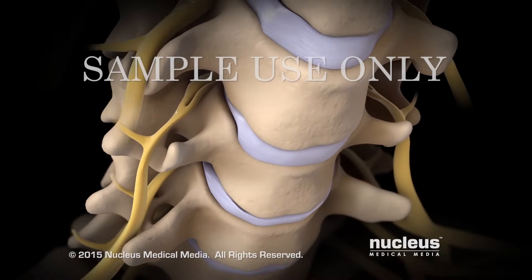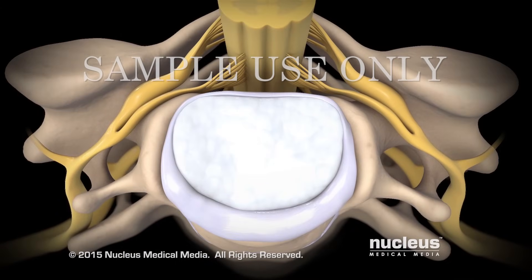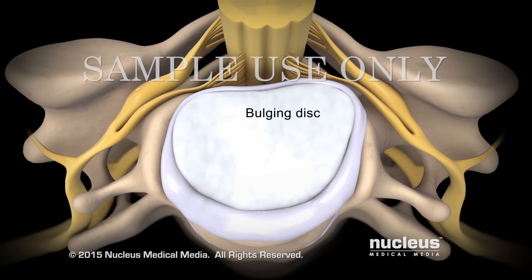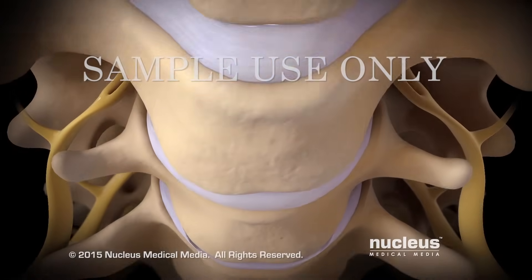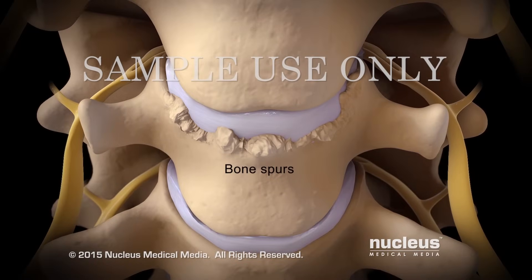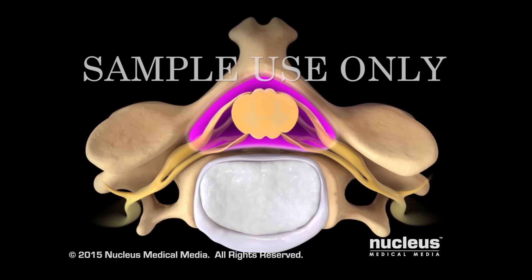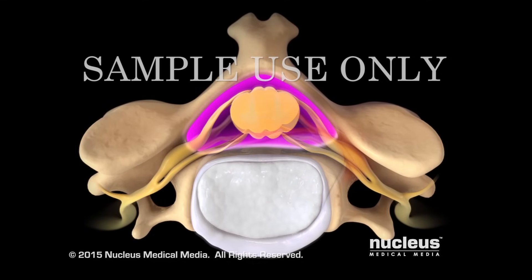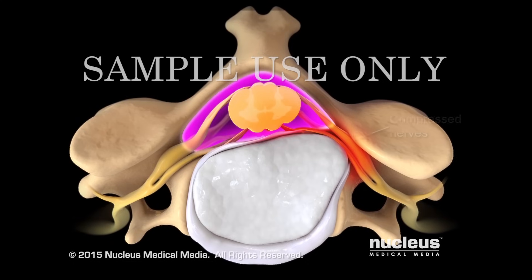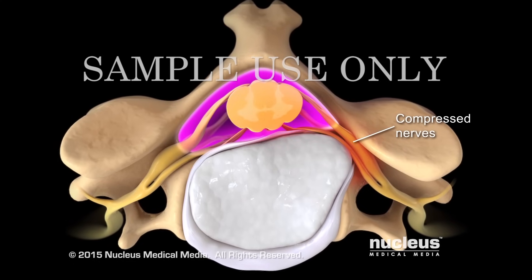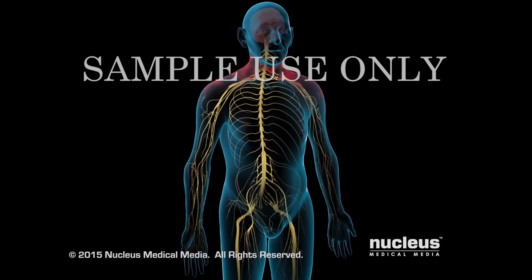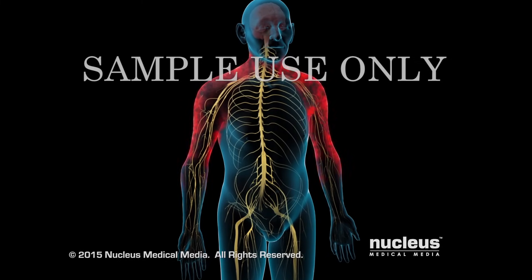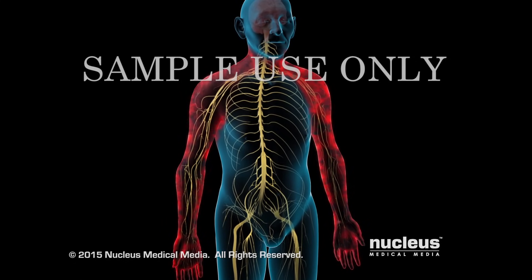Over time, your cervical spine may develop problems, such as a bulging disc, a herniated or ruptured disc, or bony growths on your vertebrae called bone spurs. These changes can narrow your vertebral canal and put pressure on your spinal cord or the nerves that branch off of it. The pressure can cause neck pain and stiffness, or pain, numbness, and weakness in your arms or hands.